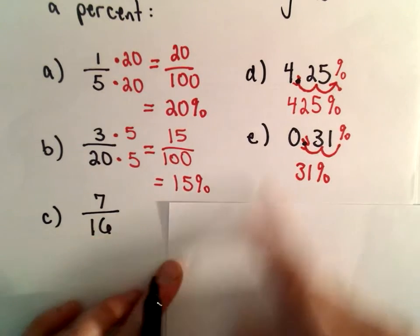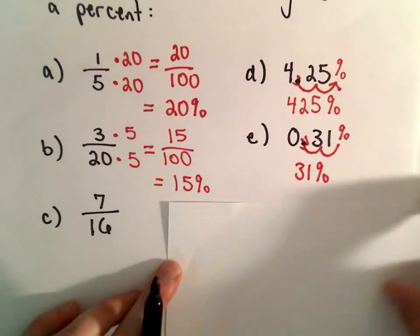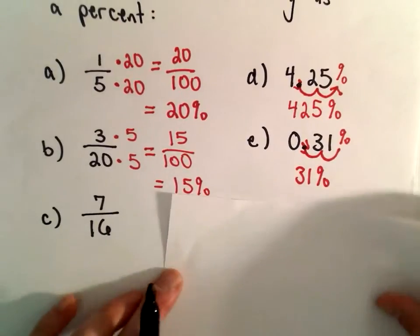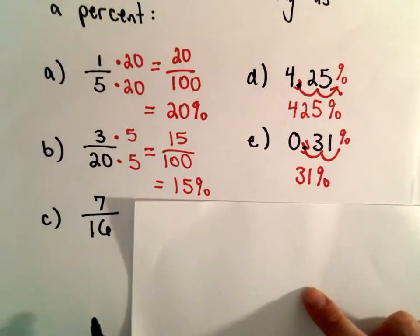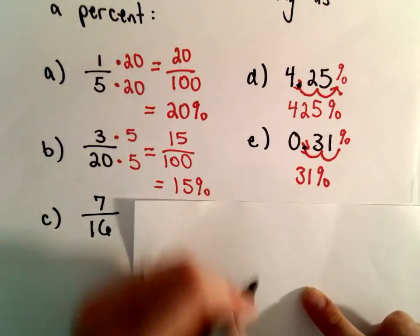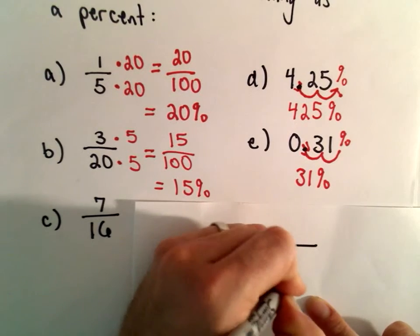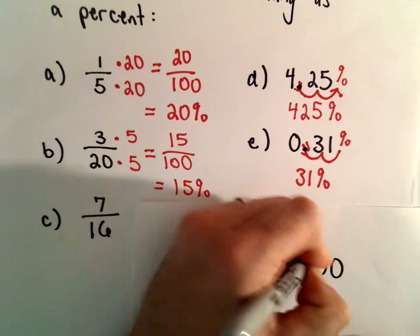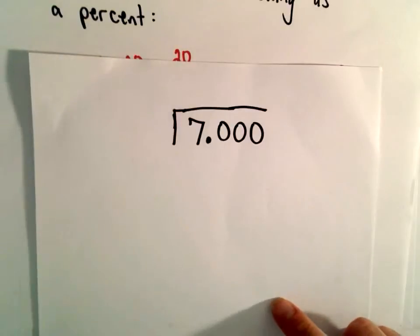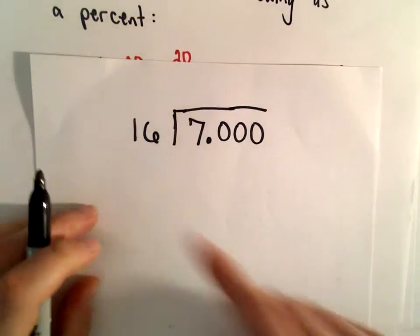What I'm going to do is I'm going to turn this back into a decimal, and then just move it two places like we did. So to make seven over sixteen into a decimal, I'm going to do long division. So we have 7, and we're going to divide that by 16.